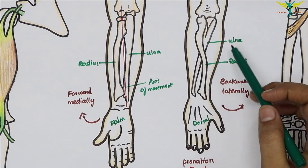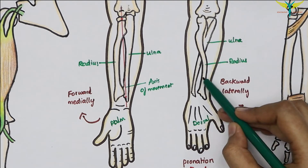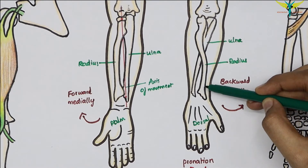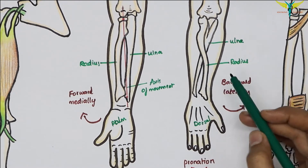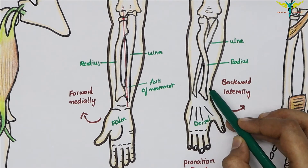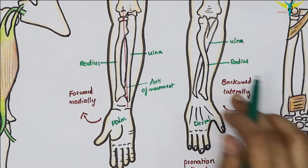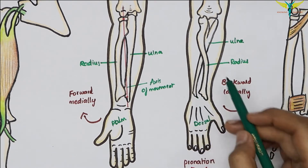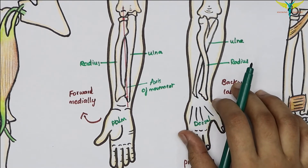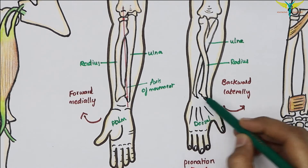In pronation, there is a rotation of the lower end of the radius along with the articular disc on the head of the ulna. As a result, the lower end of the radius crosses in front of the lower end of the ulna. Simultaneously, the head of the radius rotates within the fibro-osseous ring formed by the annular ligament and the radial notch on the ulna.